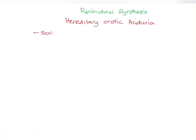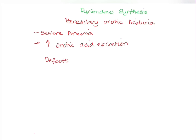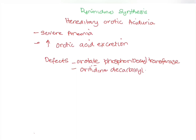Now let's look at a disease application called hereditary orotic aciduria. Patients with this disease usually have severe anemia, growth retardation, and an increase in orotic acid that is excreted, largely due to a buildup of orotate. Orotate can increase if there's a defect in orotate phosphoribosyltransferase or a defect in orotidine decarboxylase. These two enzymes are important in the formation of OMP.